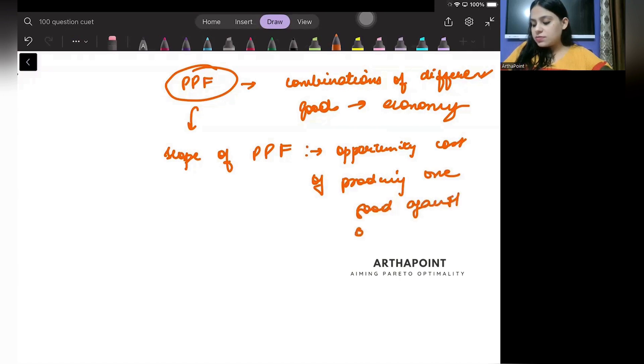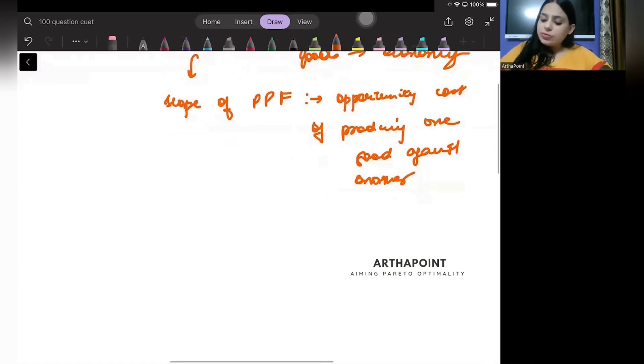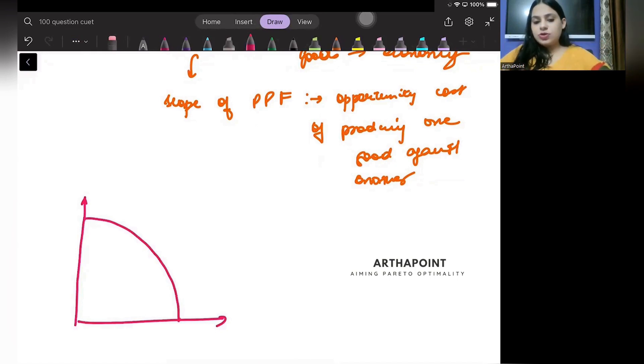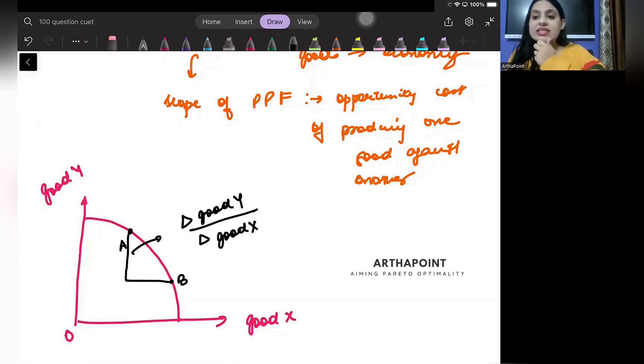Now, this production possibility frontier, a usual production possibility frontier looks like this. And this is my good x and this is good y and you go from point a to point b. So, this is how much of good y you have to give up to produce good x.